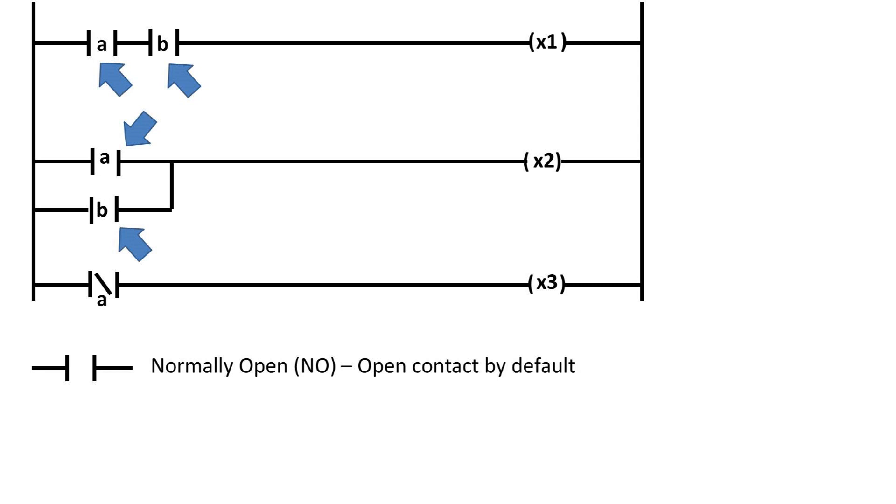Normally open, which means that by default, the circuit is open or not connected until you activate this contact. When activated, the circuit is closed or connected. This is represented by two parallel lines.